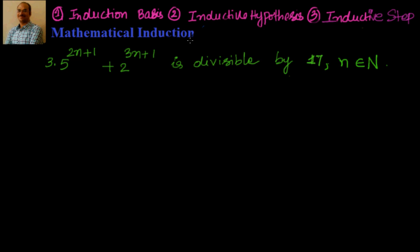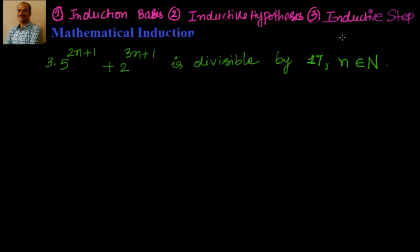We have three steps for any mathematical induction proof. First, we have to prove that it's true for a specific value — generally n equal to 1. After that, we assume it is true for a generic value n equal to k. Then we have to prove it's also true for n equal to k plus 1. That's the inductive step. So the three steps are: inductive basis, inductive hypothesis, and inductive step.